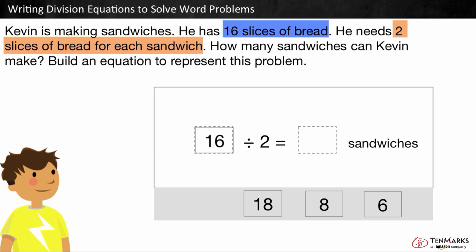This is the same as saying 2 in each group times the number of groups is equal to 16. 2 times what number equals 16? 8. So the quotient here is 8. Kevin can make 8 sandwiches with 16 slices of bread.